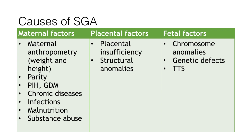Placental factors include placental insufficiency and structural anomalies of the placenta. Fetal factors include chromosomal anomalies, genetic defects, or congenital infection syndromes. Chromosomally abnormal babies like those with Down syndrome or Turner syndrome will have hypoplastic IUGR, and their growth potential will be less than that of nutritionally restricted IUGR.